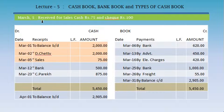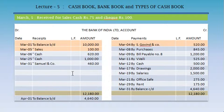On March 5, received for cash sales: cash Rs. 75 and by cheque Rs. 100. To record the cash portion in the cash book on the debit side: March 5, to sales, Rs. 75. To record the cheque portion, it is entered in the Bank of India account on the debit side: March 5, to sales, Rs. 100.